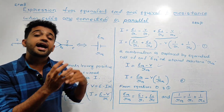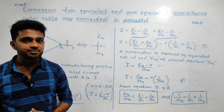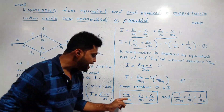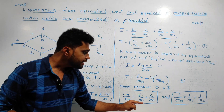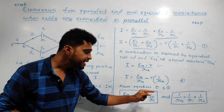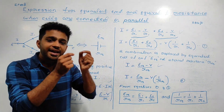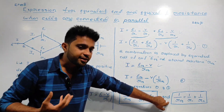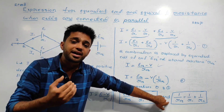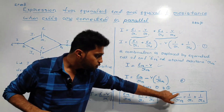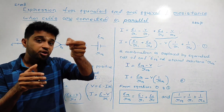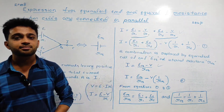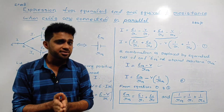If we connect n cells in parallel, the general formula is: E_eq divided by r_eq equals E1/r1 plus E2/r2 plus E3/r3 plus ... plus En/rn. And: 1 divided by r_eq equals 1/r1 plus 1/r2 plus 1/r3 plus ... plus 1/rn.